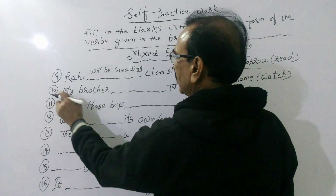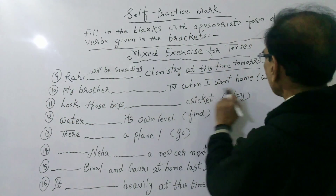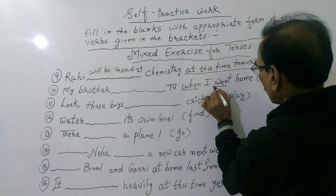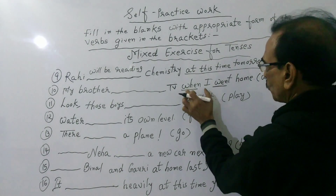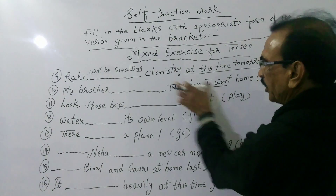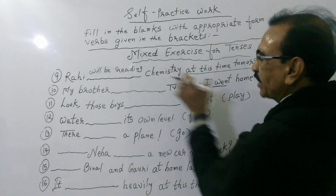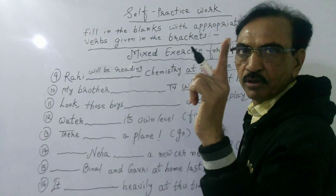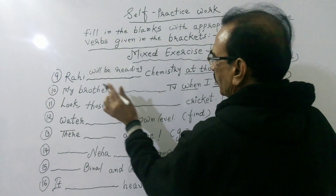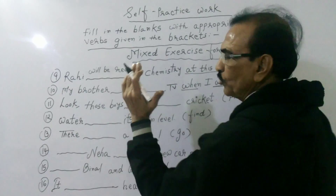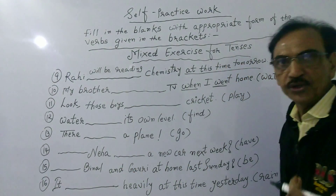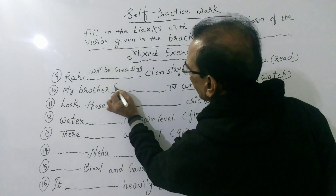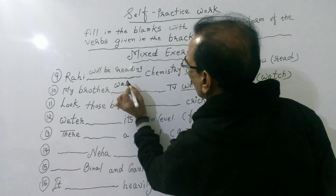Sentence ten: My brother dashed TV when I went home. 'When' is accompanied by the past tense form of 'go', which denotes a reference of time in the past — so it is continuous past tense. This is an affirmative sentence, so we use 'was/were' plus verb with -ing. My brother is singular, so the correct answer is: My brother was watching TV when I went home.